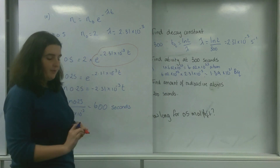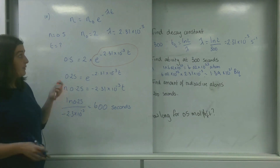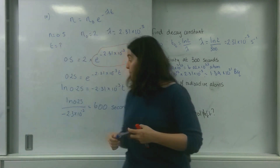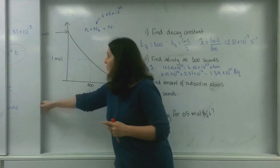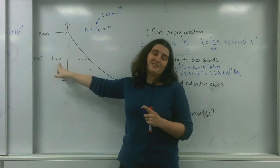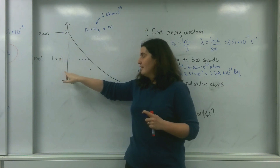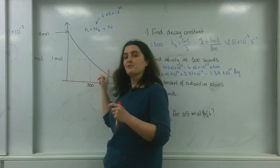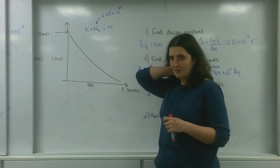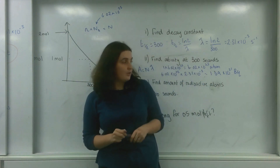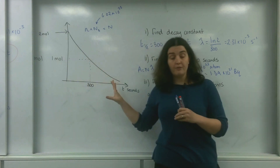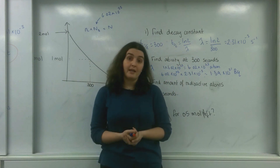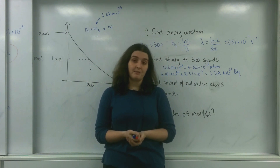The keen among you may have realised you could have worked this out without the long calculation, but this calculation does prove it works. Think about it: one half-life takes you from 2 moles to 1 mole, and halving again is another half-life. So 300 seconds is one half-life, and 600 seconds gets you to the next — giving 0.5 moles. And that is how you can use a graph, including with moles, to work out decay relationships.